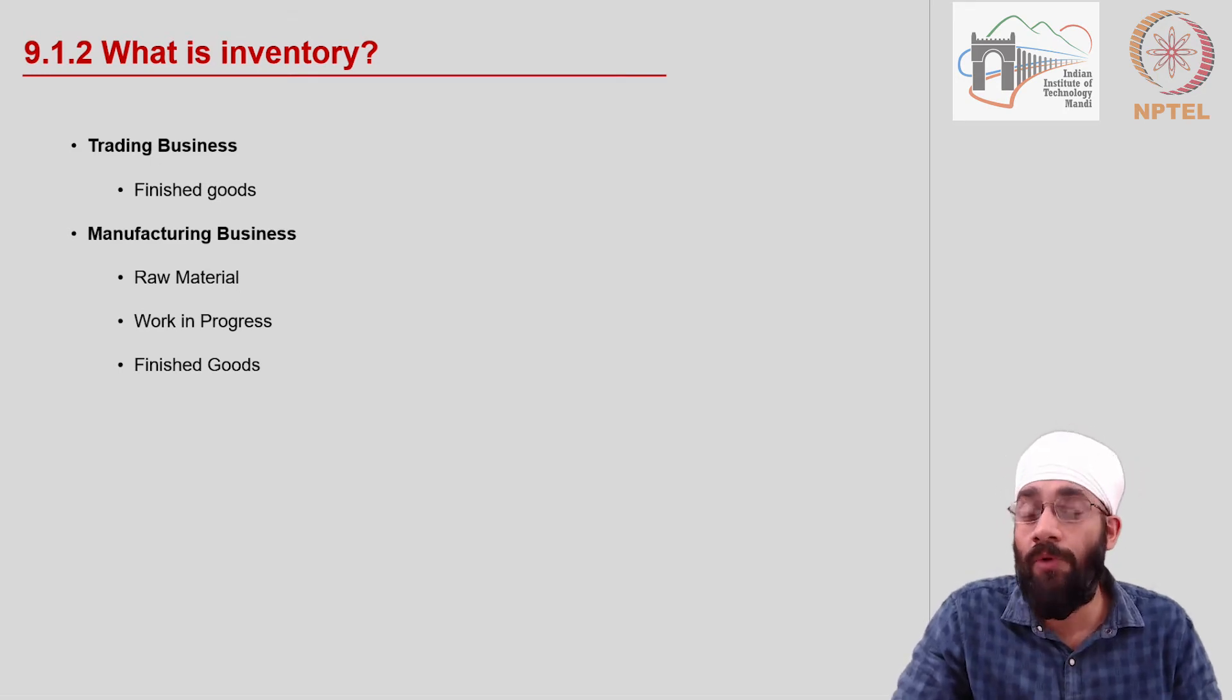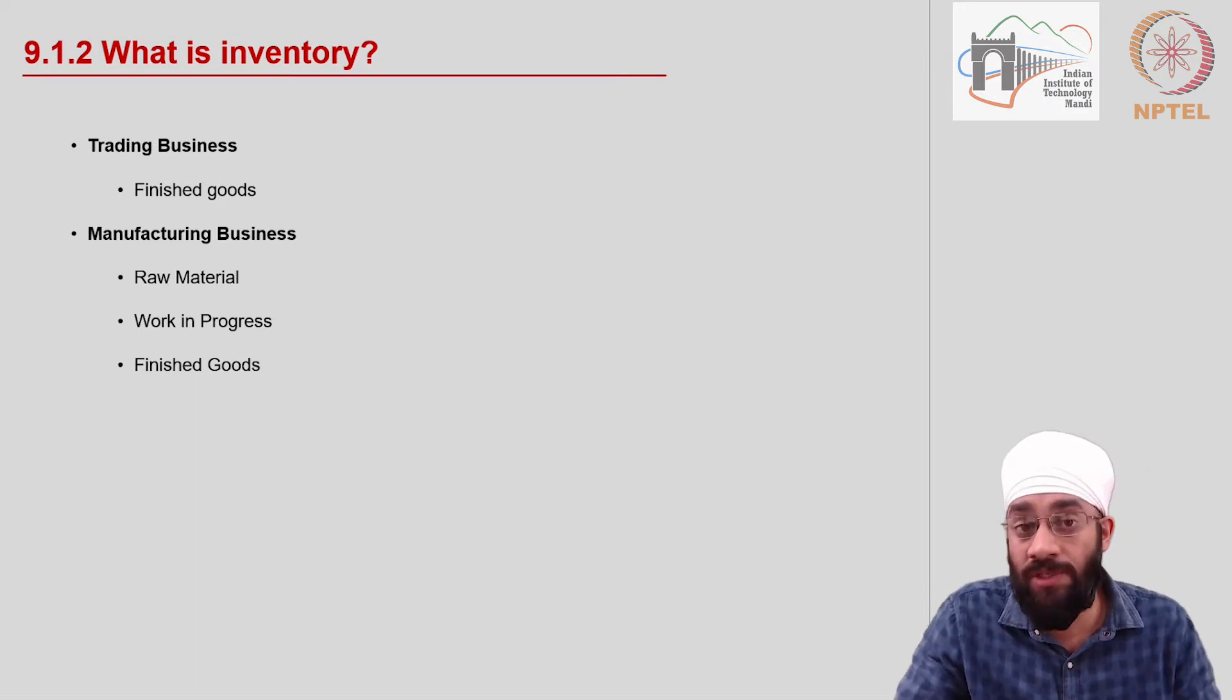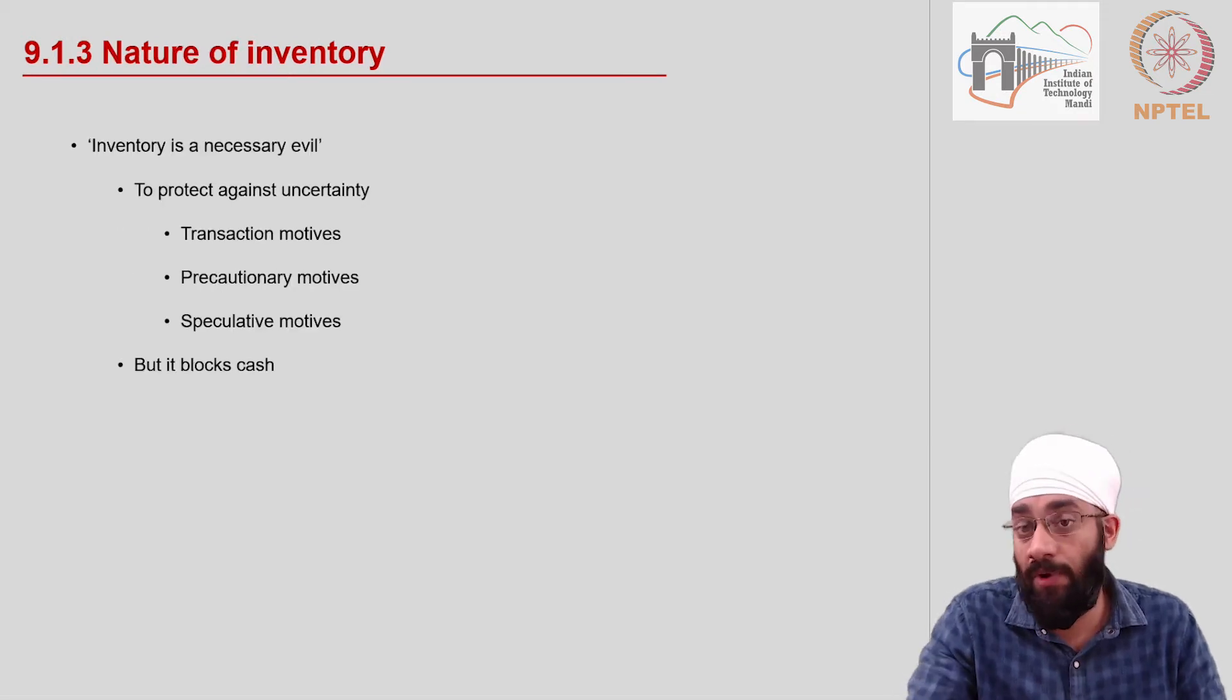Also there can be work in progress. So all I am saying is the notion, the concept of inventory basically represents a collection of items which are used to either convert, which are used to either in the production process or which are used to be sold. But the basic concept is that you use this stock of goods to further sell and make profit.